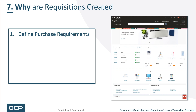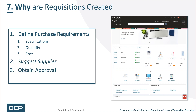Why are requisitions created? First, to define the purchase requirements: specs, quantity, and cost are defined on the requisition. You can suggest a supplier, but the general theory is the requester tells you what, and sourcing tells you who and how much. Requisitions are very importantly used to drive approval. And lastly, depending on whether you're a government entity or want to implement budget control, you can use budgets with the click of a button to manage or limit spend — another key reason requisitions are created.